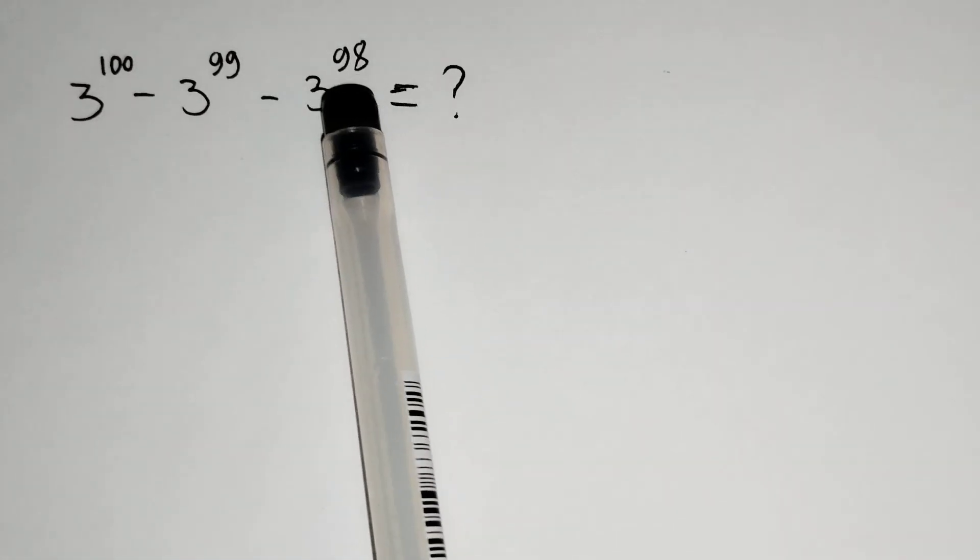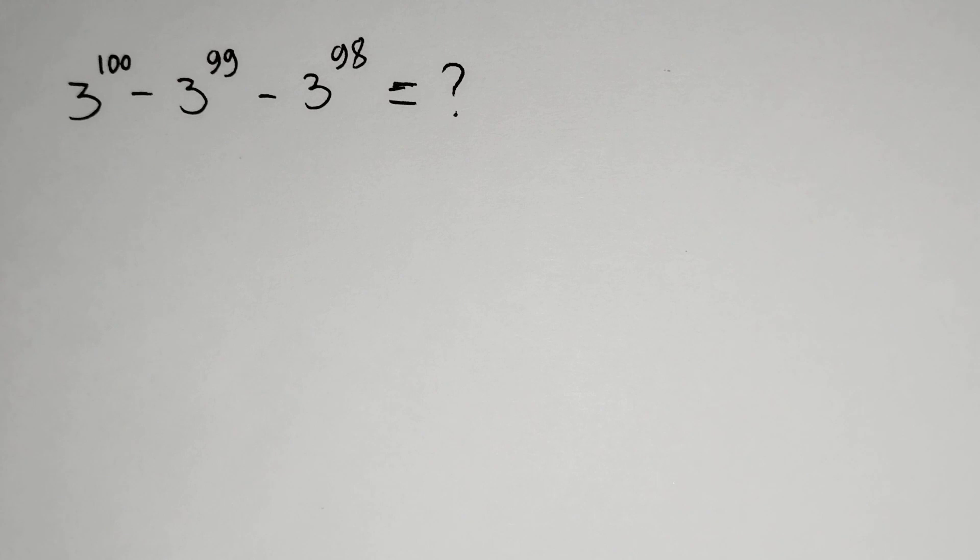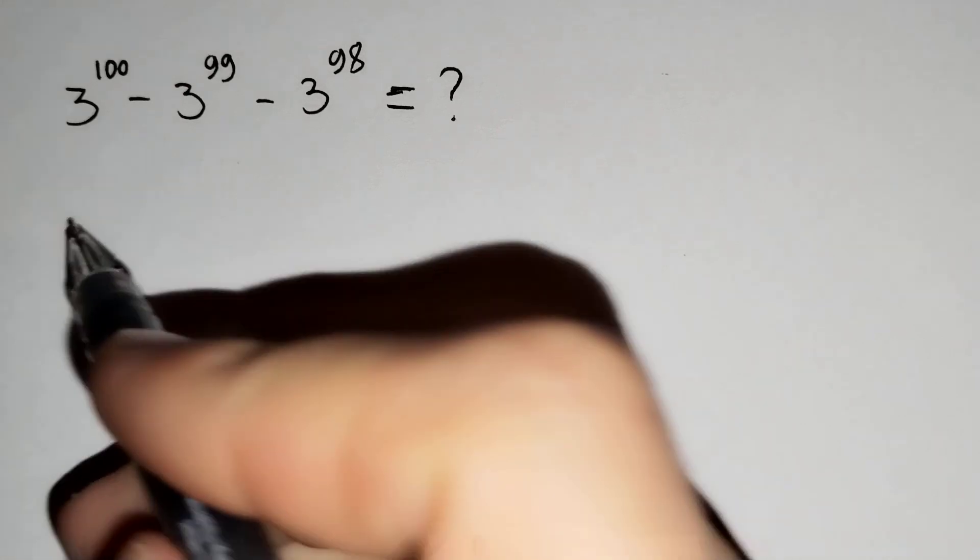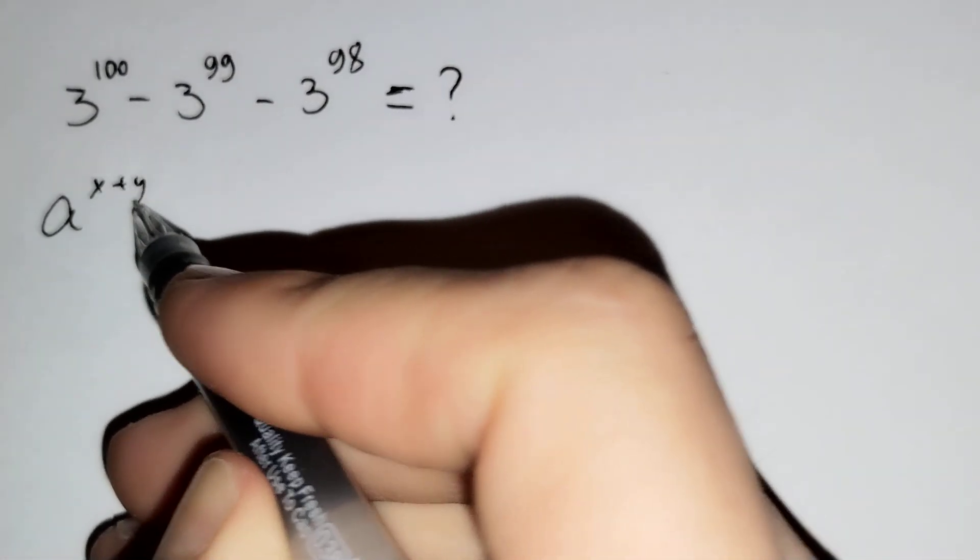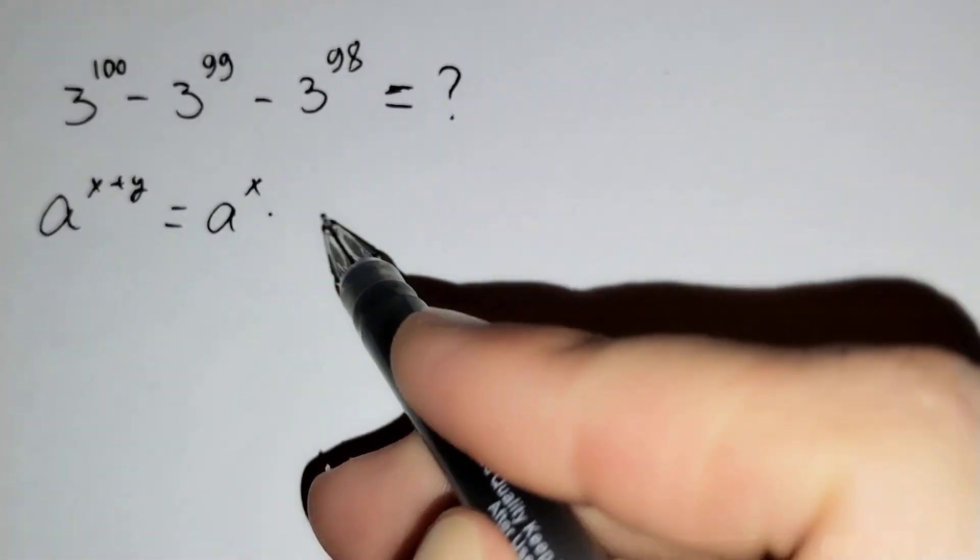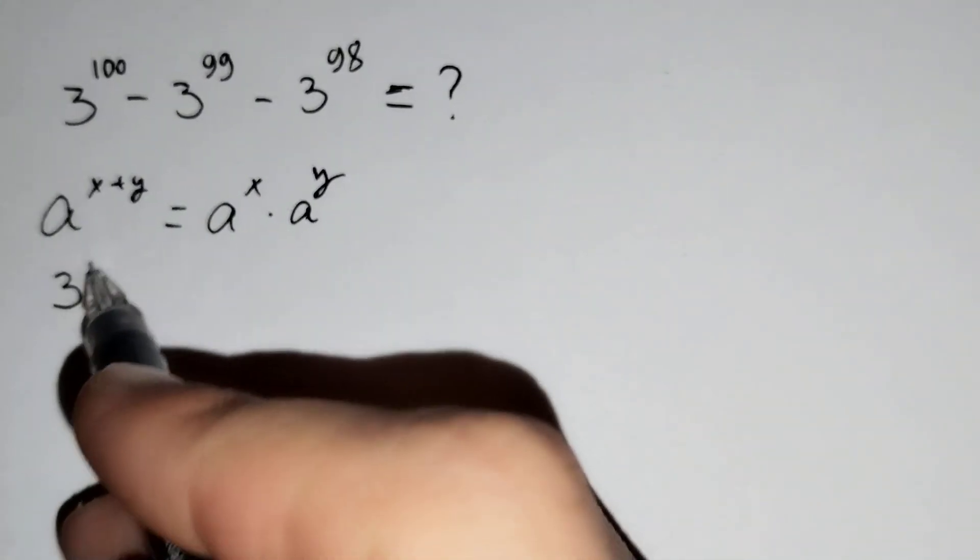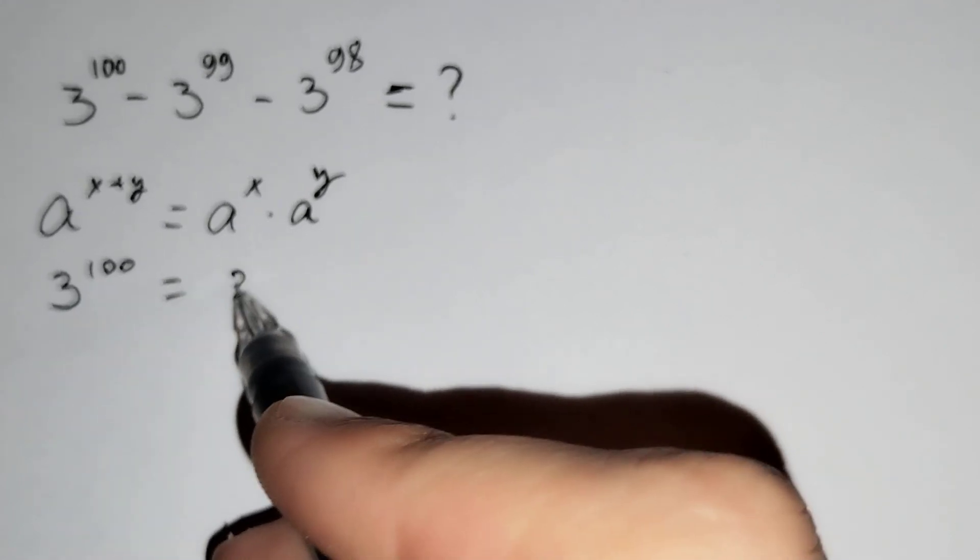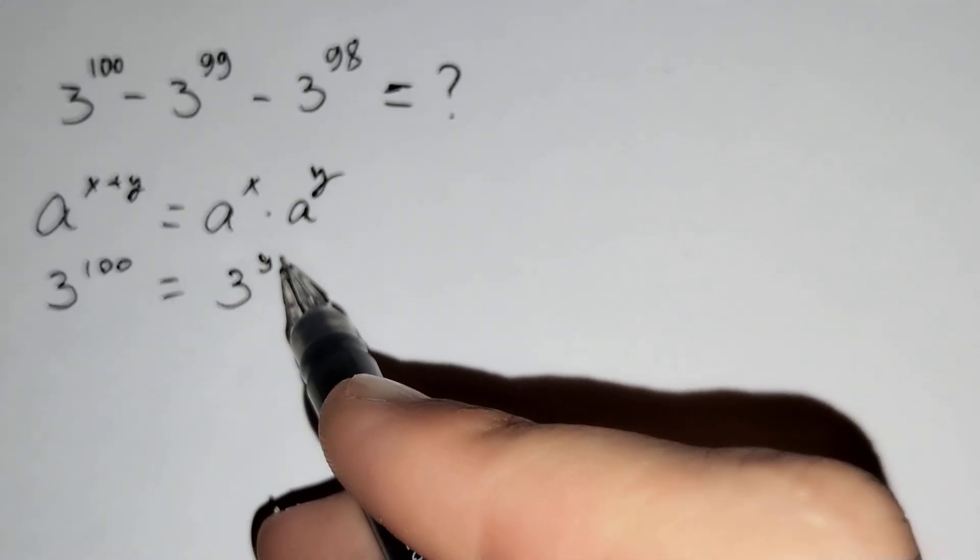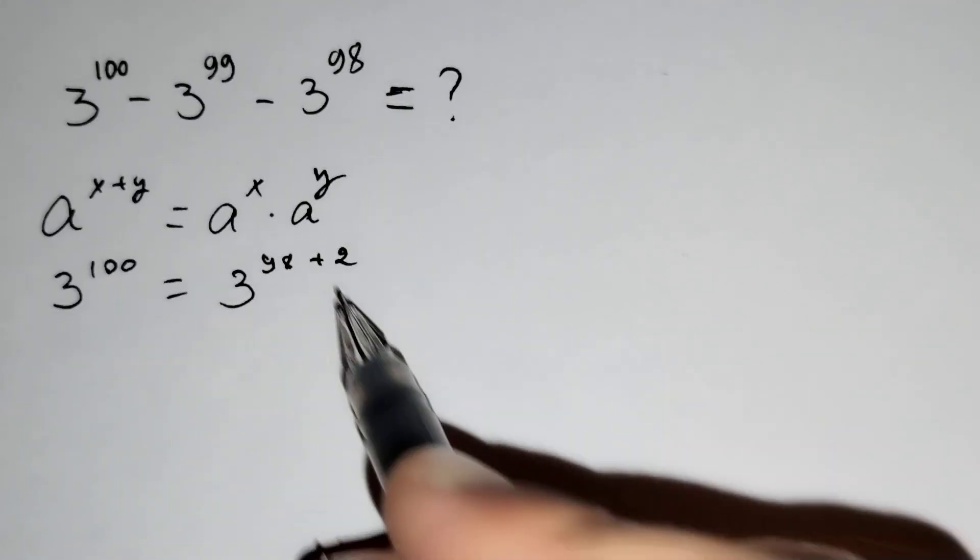Firstly, we know that a^(x+y) = a^x * a^y. And 3^100 = 3^(98+2) = 3^98 * 3^2.